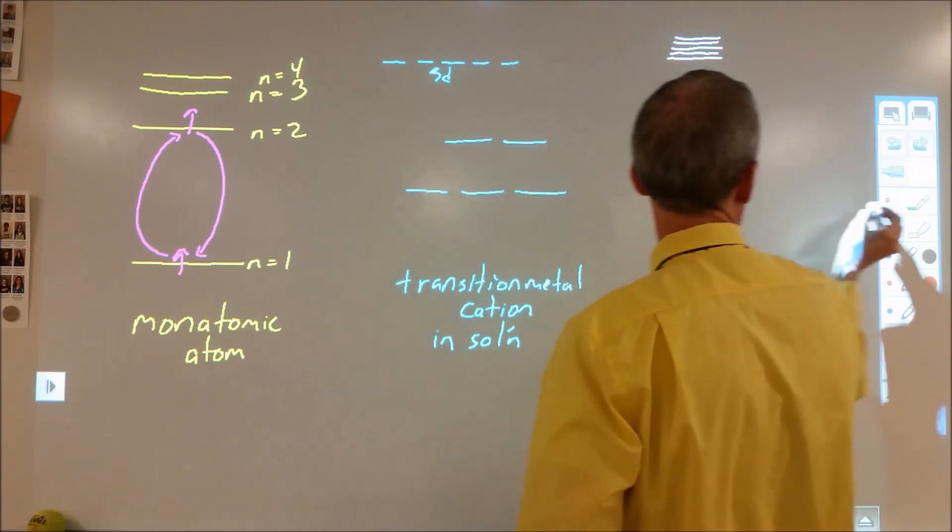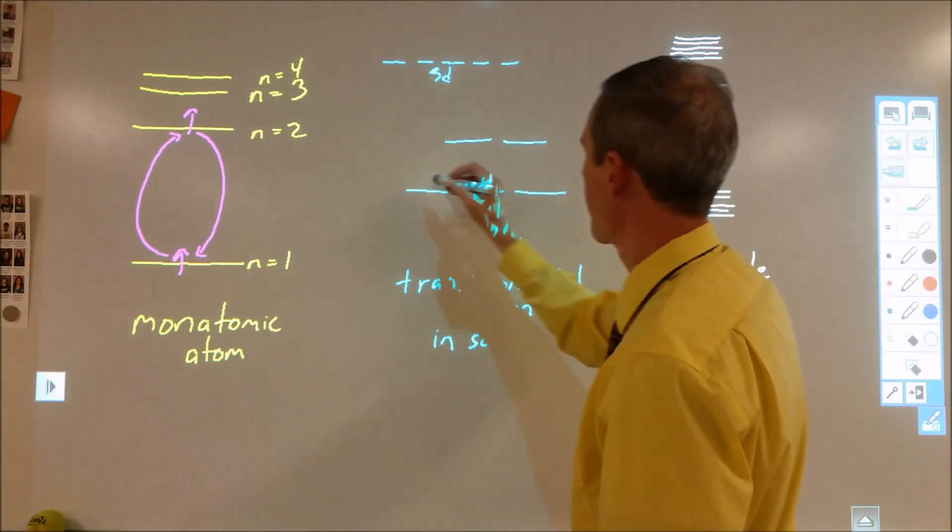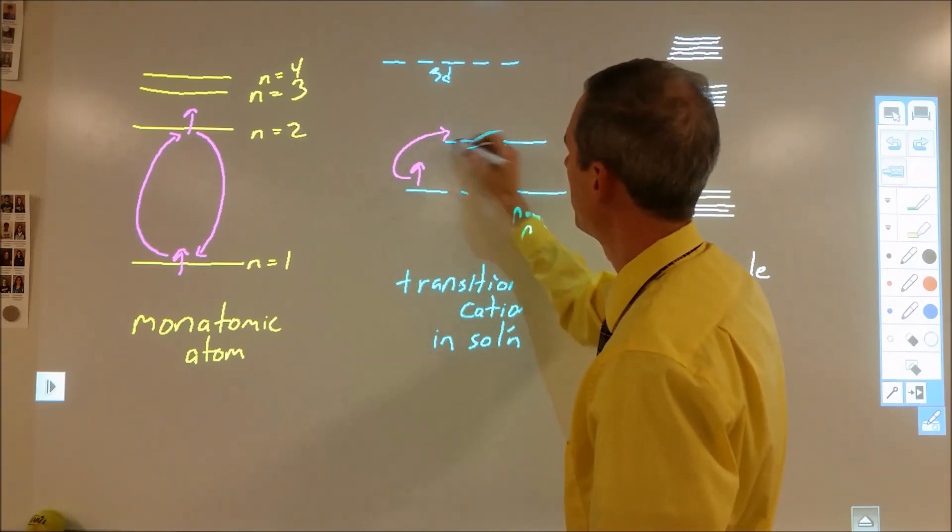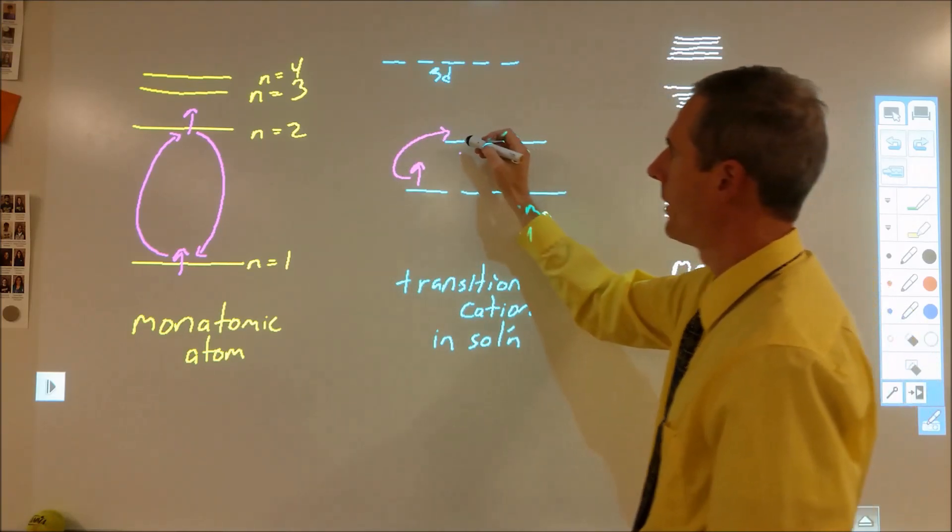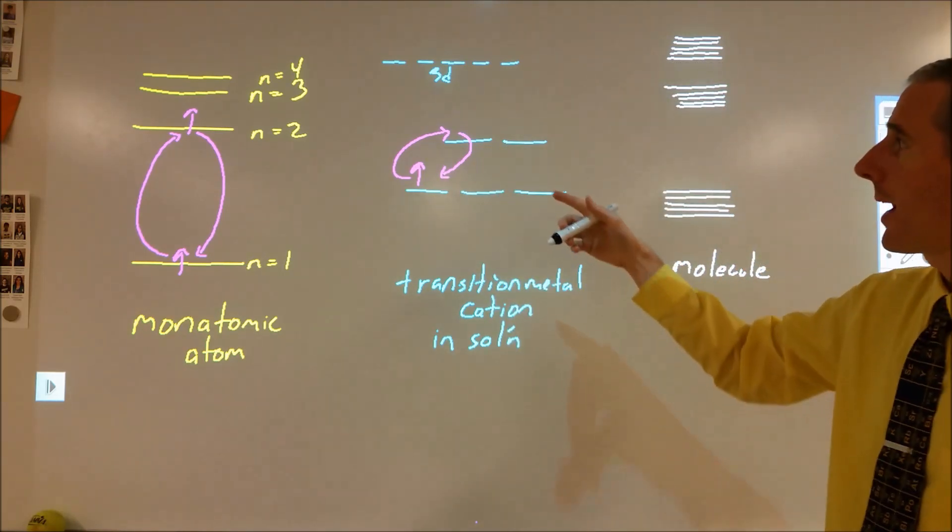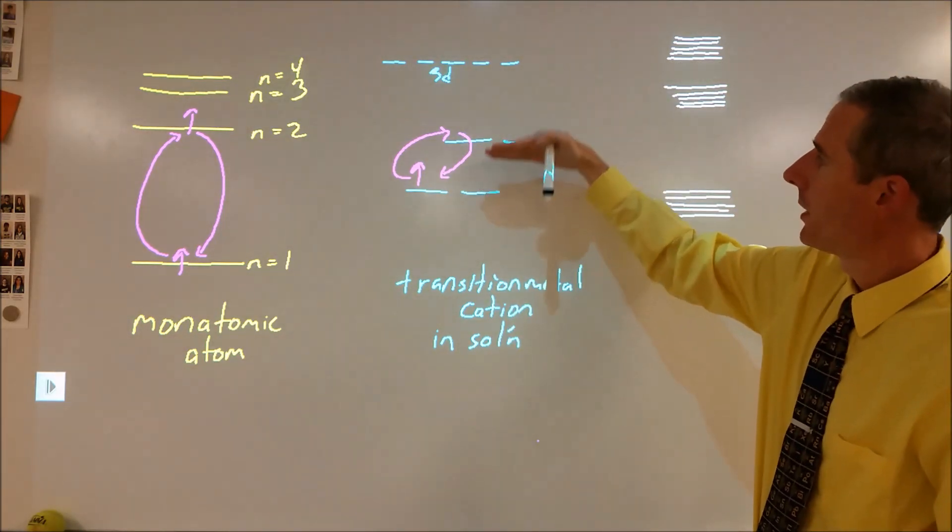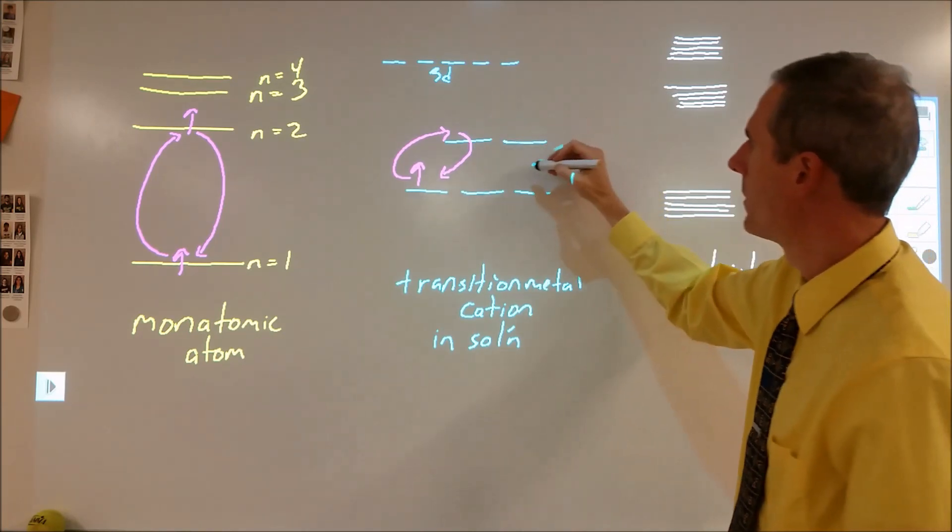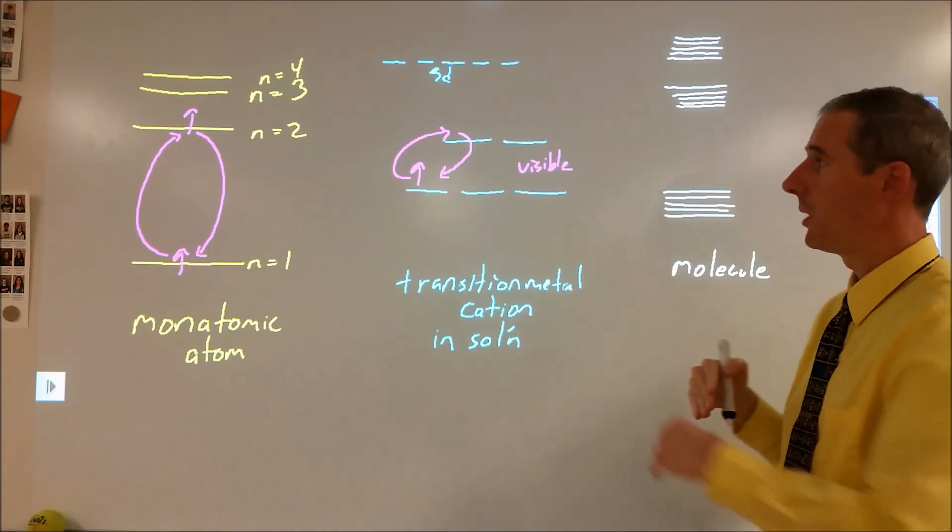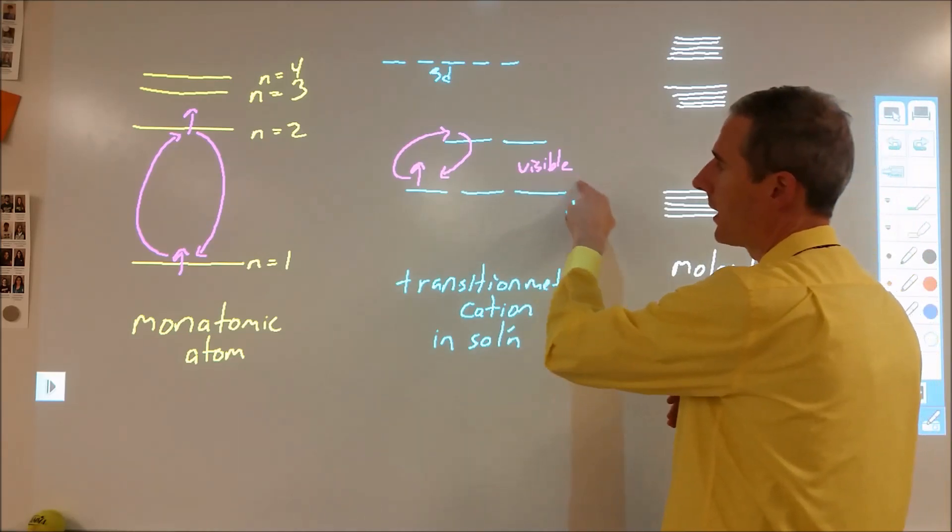What can happen here is that if you have an electron and you have the space for it to be promoted, it can absorb light and move from there to there. It can also emit light by going back.